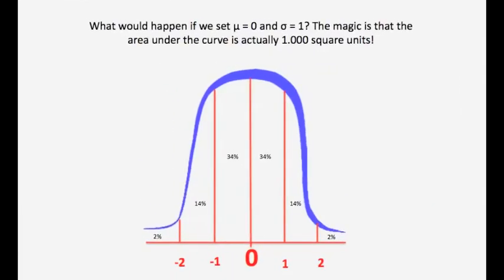Remember when I asked what would happen if we set mu equal to 0 and sigma equal to 1? The magic is that the total area under this curve actually becomes 1 square unit, or 1.000 square units. What's cool is that with the mean set at 0 and the standard deviation at 1, those areas under the curve in actual square units match the percentages of the normal distribution curve. There must be magic.